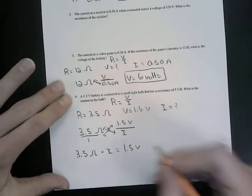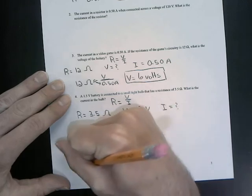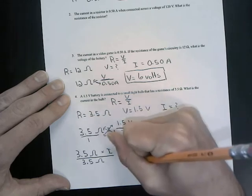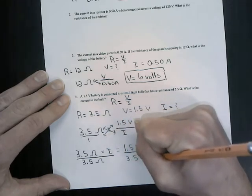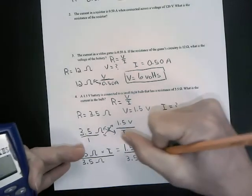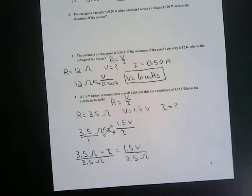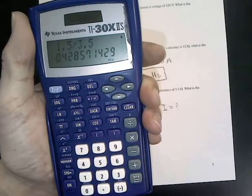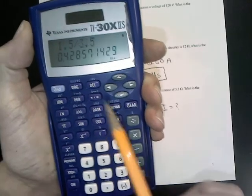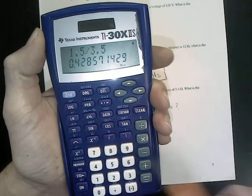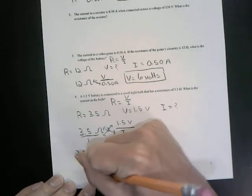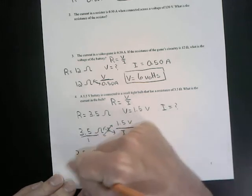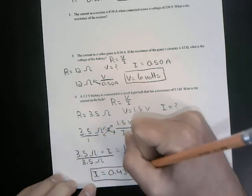Okay. So to get I by itself, we divide each side by 3.5 ohms. Divide each side by 3.5 ohms. And so our current, what we need to do in our calculator to find our current is we need to take 1.5 divided by 3.5. We press enter and we get a current if we round to two decimals of 0.43 amps. Remember, I here is in amps. So 0.43 amps. All right.